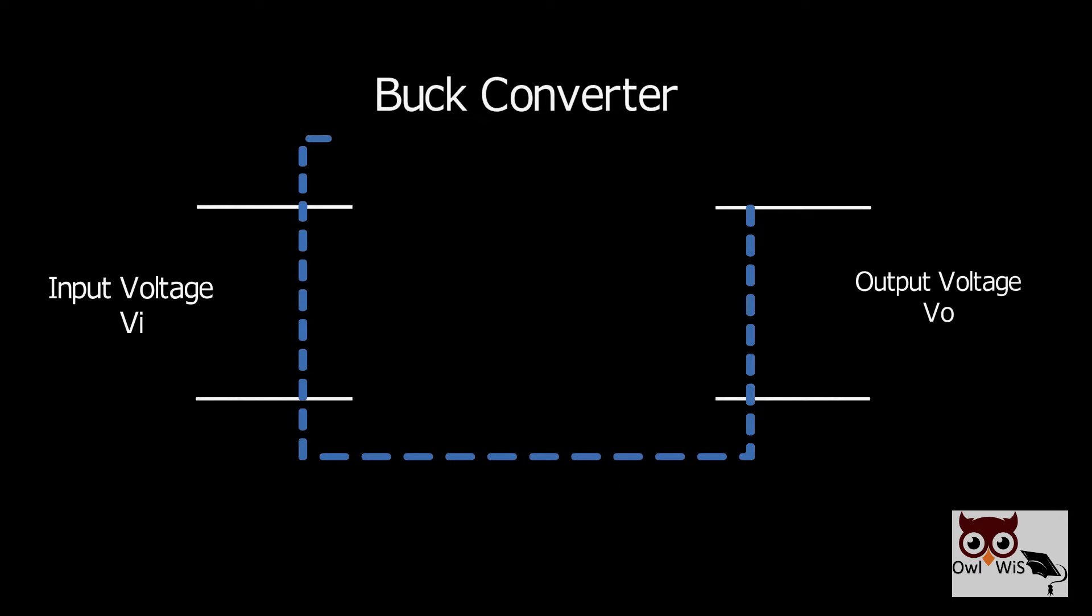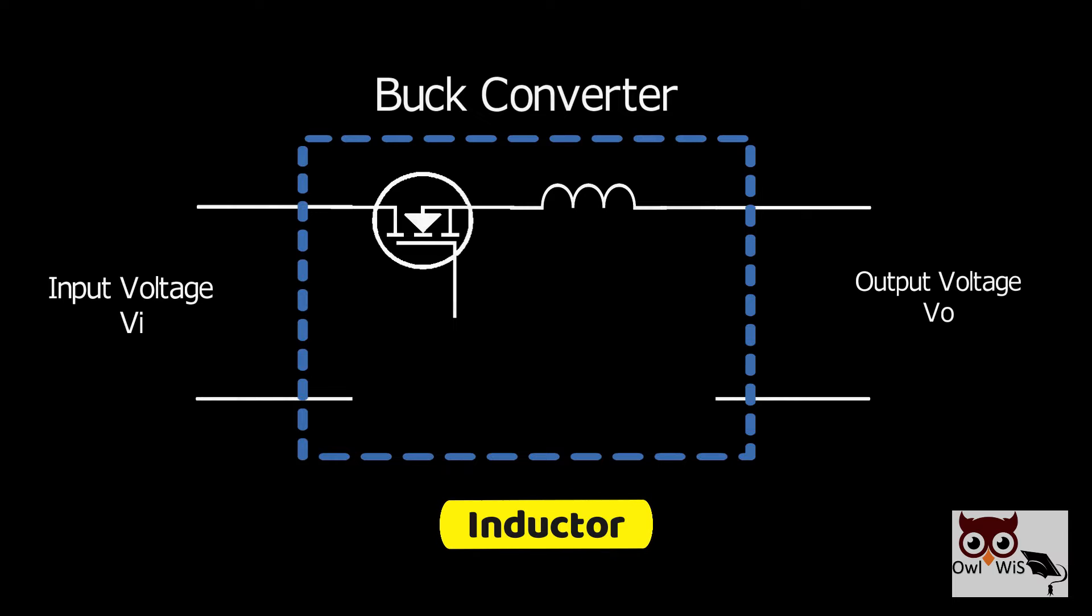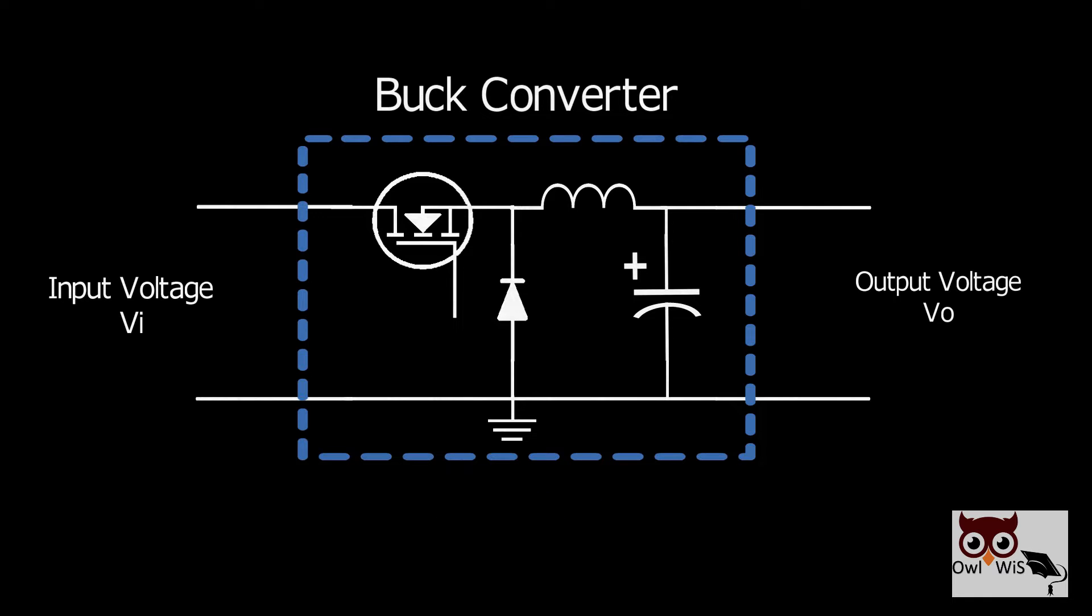Inside a buck converter is a semiconductor switch that regulates the output, inductor that stores energy in its magnetic field, a capacitor that filters the output, and a diode. The buck converter regulates output voltage by rapidly switching the transistor on and off.